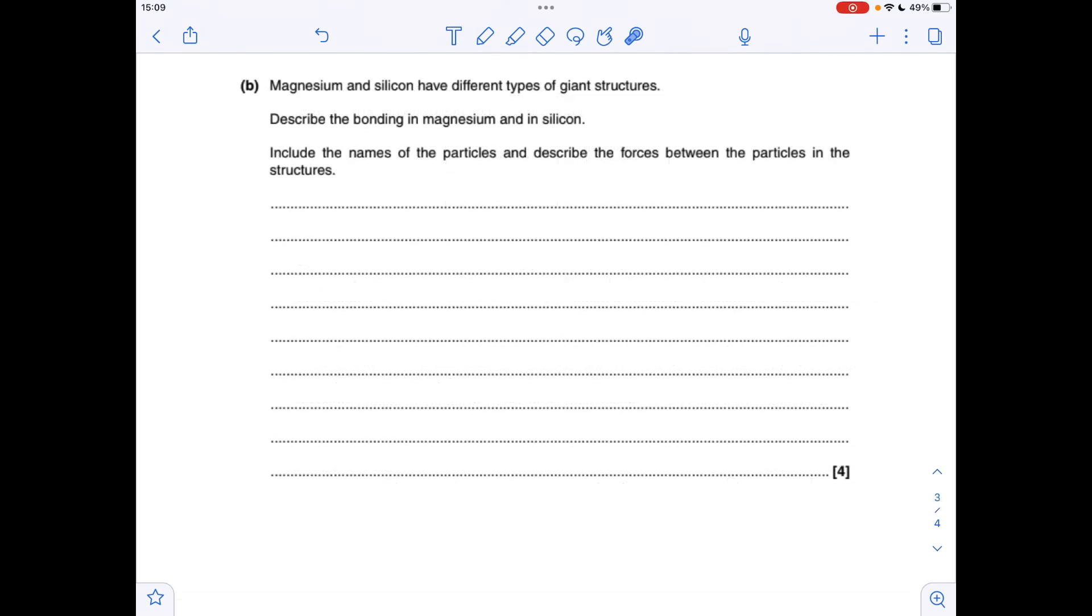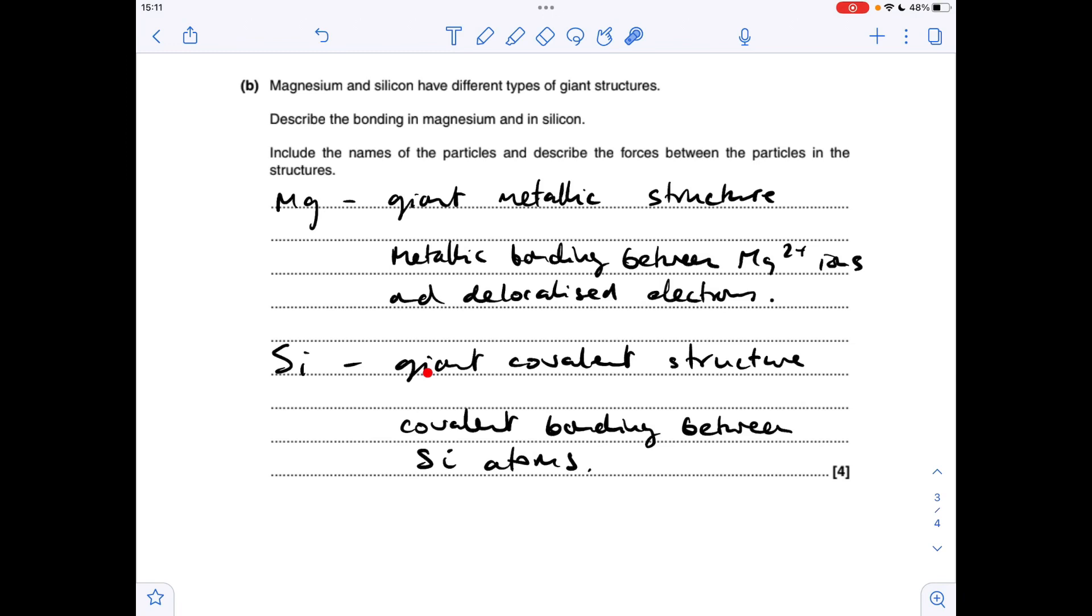Moving on to part B, so we're told that magnesium and silicon have different types of giant structures. So we've just got to describe the bonding in these two substances, and we've got to pay particular attention to the names of the particles and describe the forces between the particles. So magnesium first, obviously we've got a giant metallic structure, so it's got metallic bonding between Mg2+ ions and delocalised electrons. And silicon has a giant covalent structure, so obviously covalent bonding between silicon atoms.